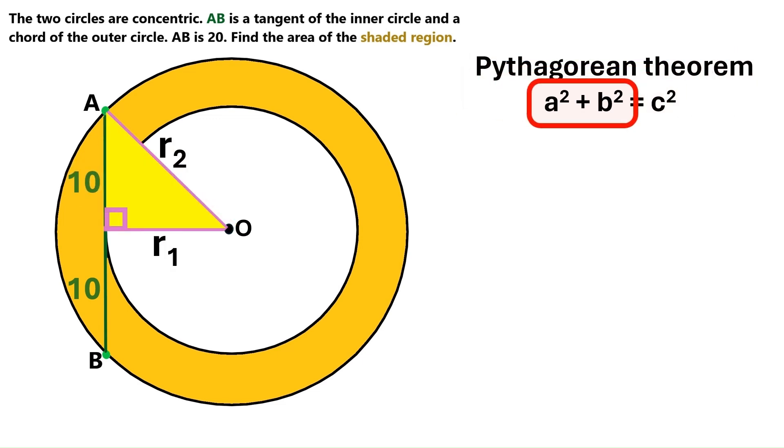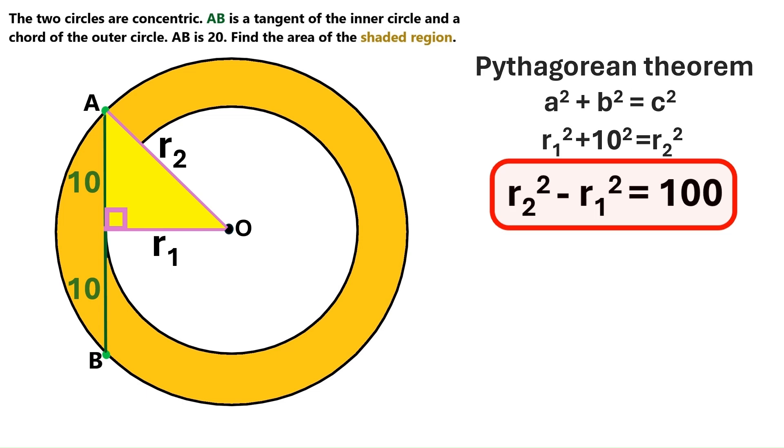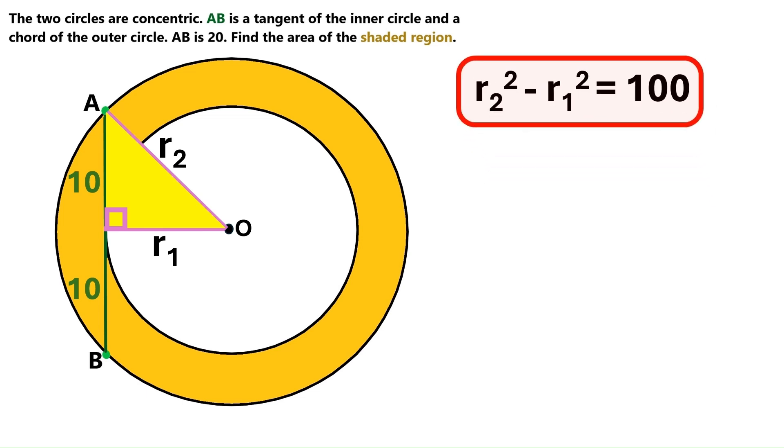A and B are the legs of the right triangle. So let's change A squared to R1 squared and B squared to 10 squared. C is the hypotenuse, so let's change C squared to R2 squared. I did the math for you, and the result is R2 squared minus R1 squared equals 100. Let's keep this important finding up here.